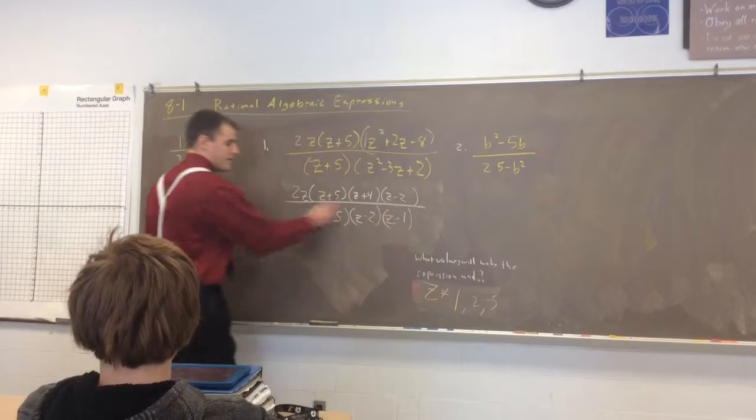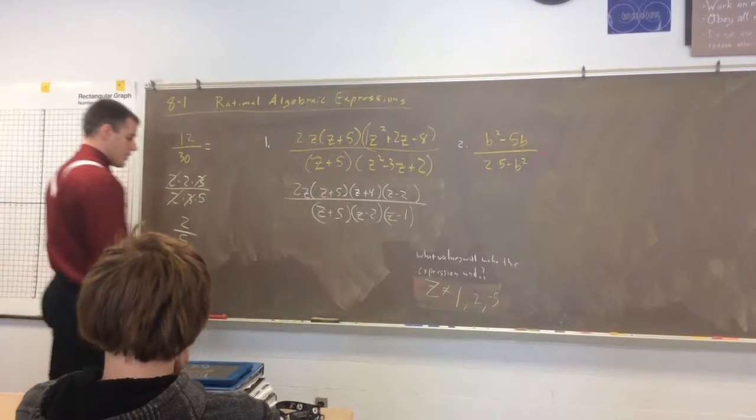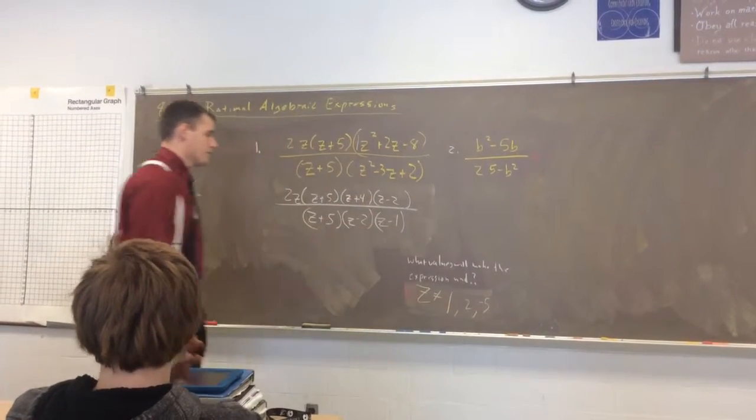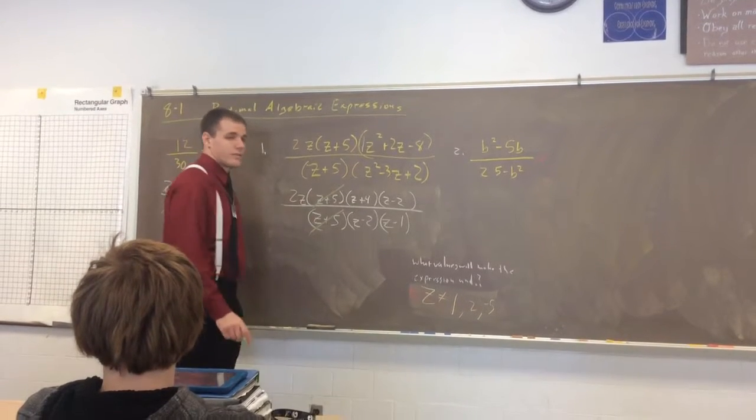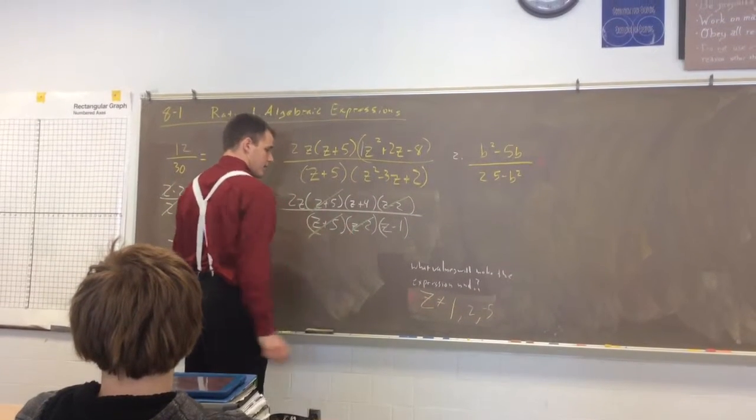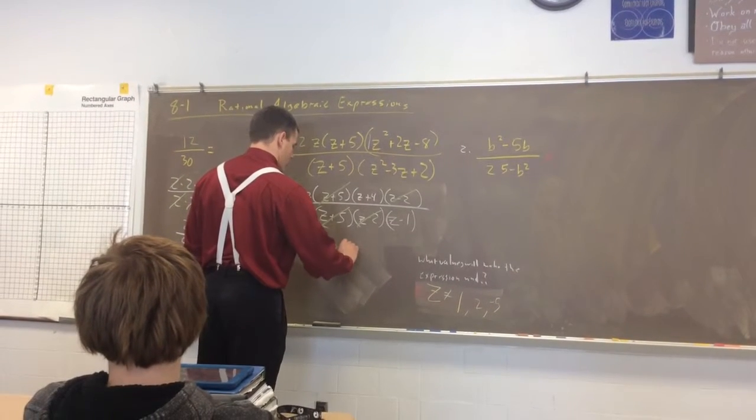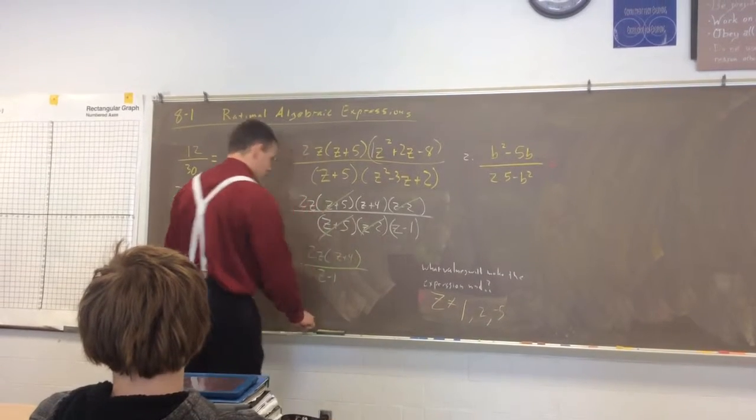So, now we simplify the rest of the way. What can I cancel from both top and bottom? Z plus 5. Z minus 2. And we're left with 2z times z plus 4, all divided by z minus 1. And we're done.